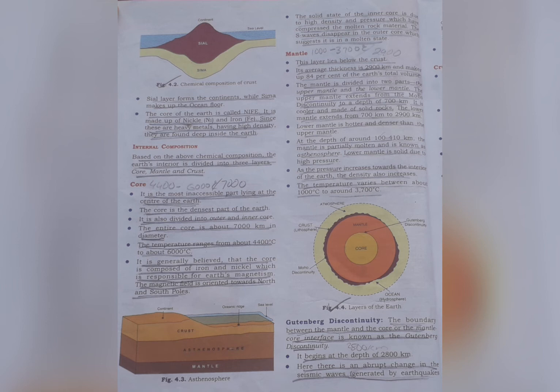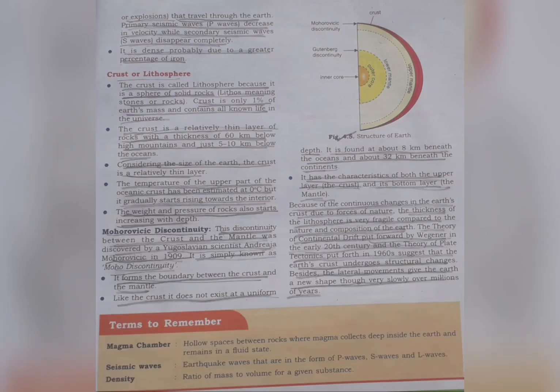The lower mantle is solid due to high pressure. As pressure increases towards the interior of the Earth, the density also increases. The temperature varies between about 1,000°C to around 3,700°C. Gutenberg Discontinuity — the boundary between the mantle and core, or the mantle-core interface, is known as the Gutenberg Discontinuity. It begins at a depth of 2,800 km. Here there is an abrupt change in seismic waves generated by earthquakes or explosions travelling through the Earth. Primary seismic waves (P waves) decrease in velocity, while secondary seismic waves (S waves) disappear completely. It is dense, probably due to a greater percentage of iron.